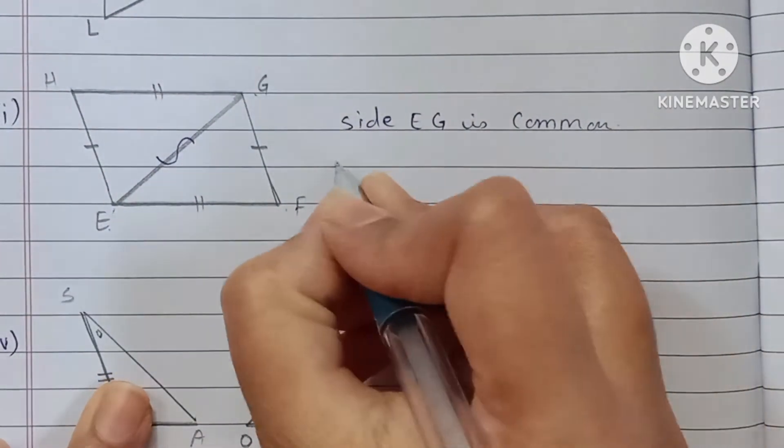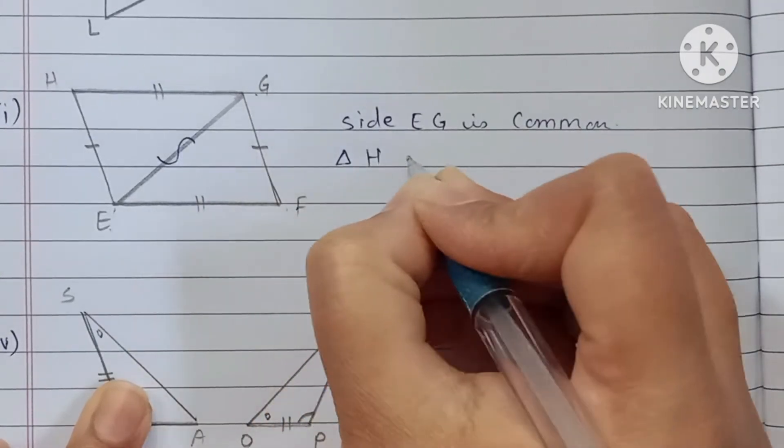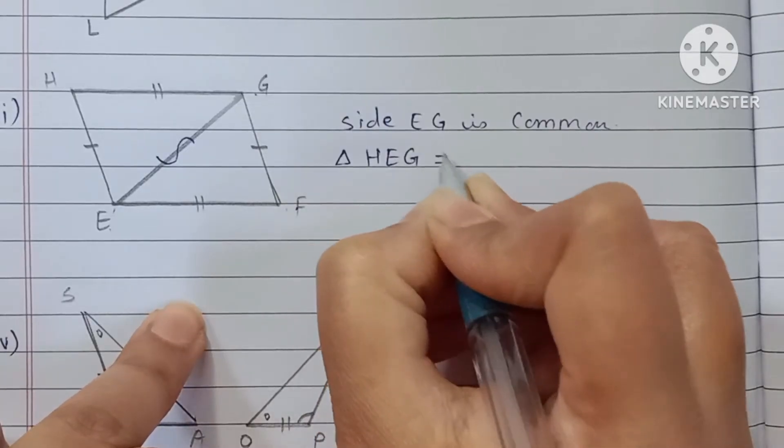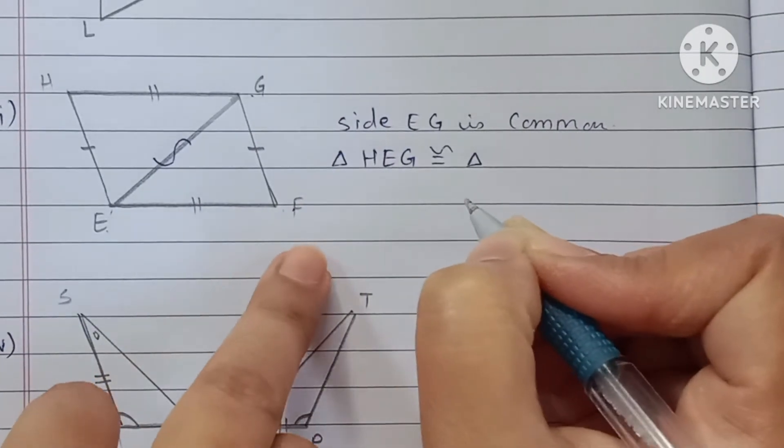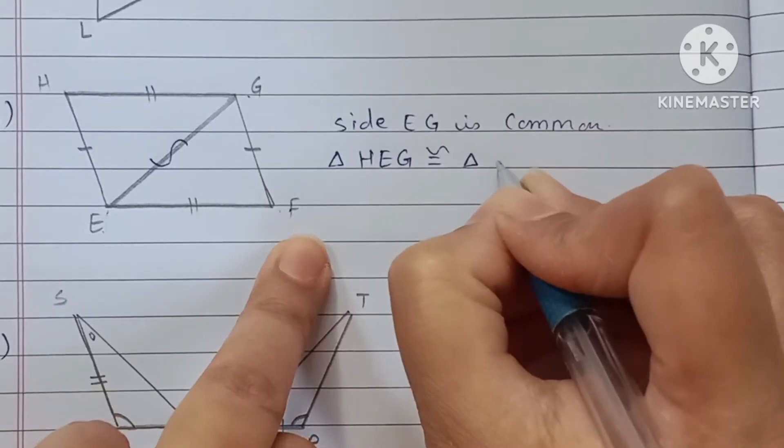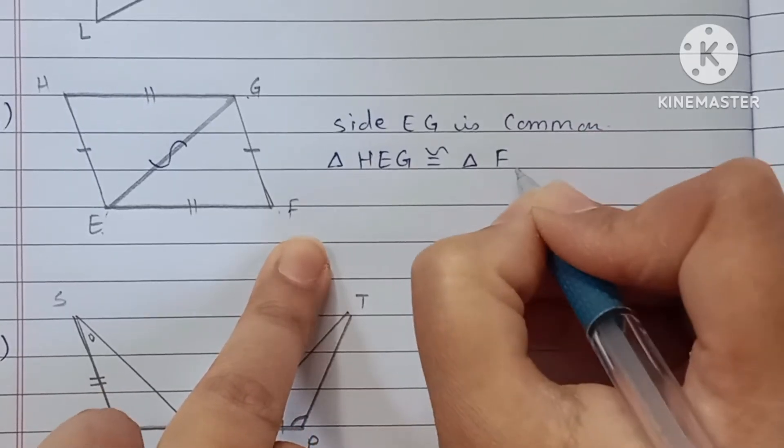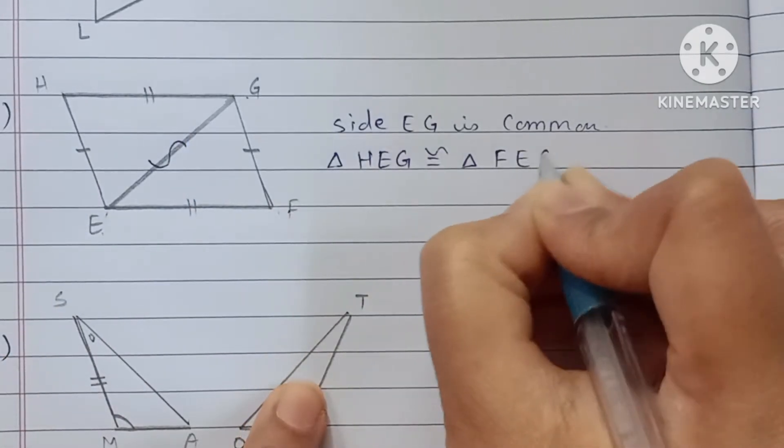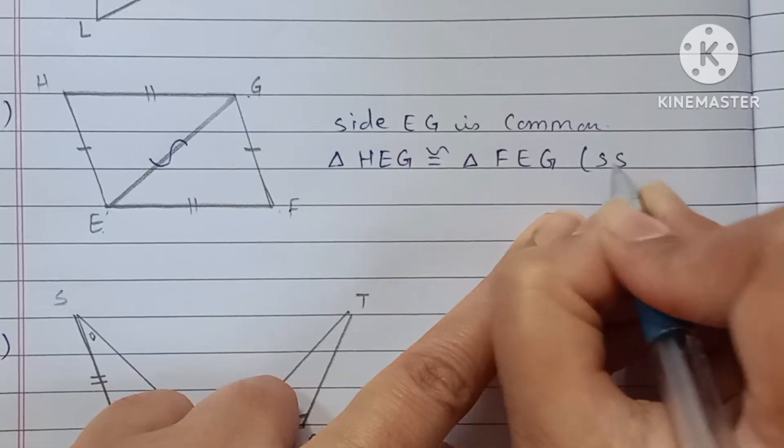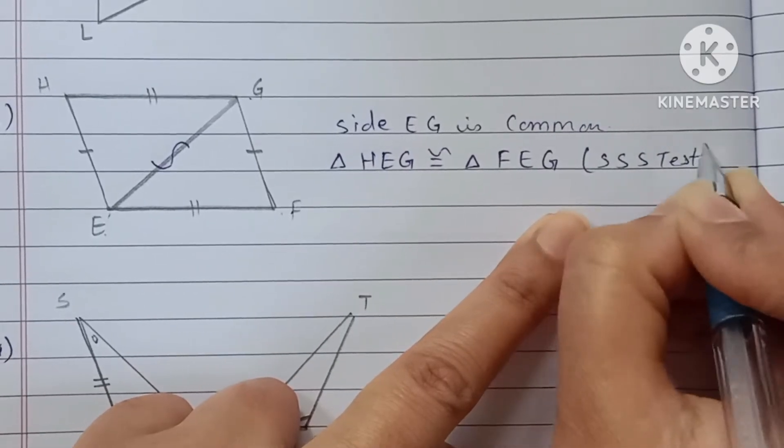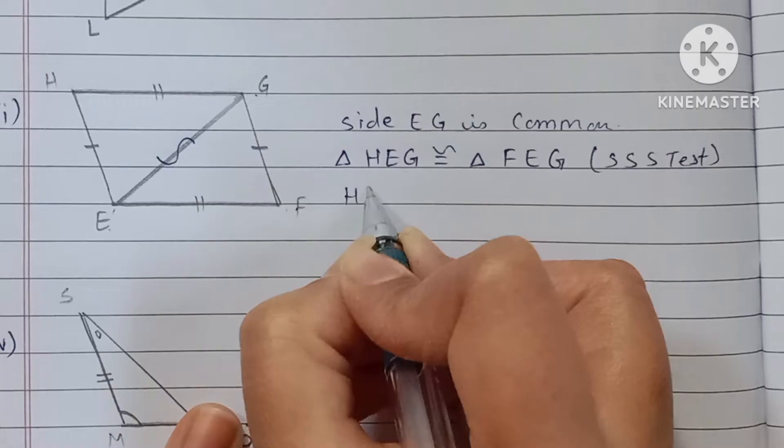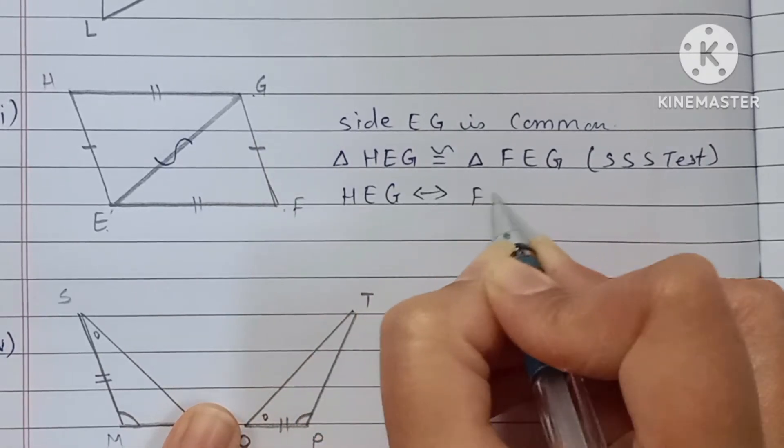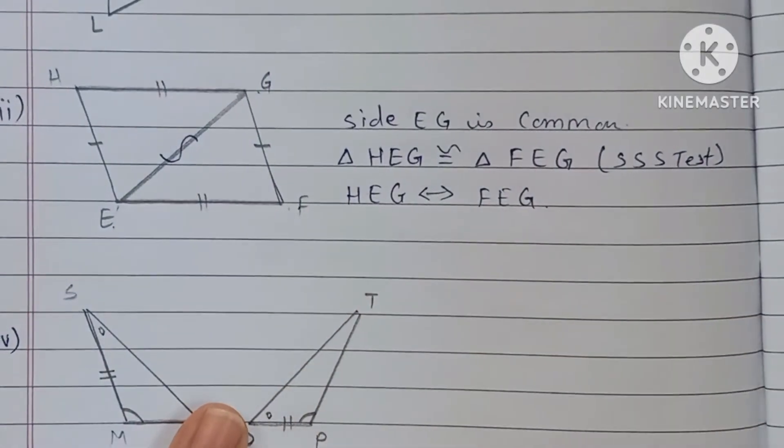Triangle HEG is congruent with triangle FEG by SSS test. And one-to-one correspondence: HEG corresponds to FEG.